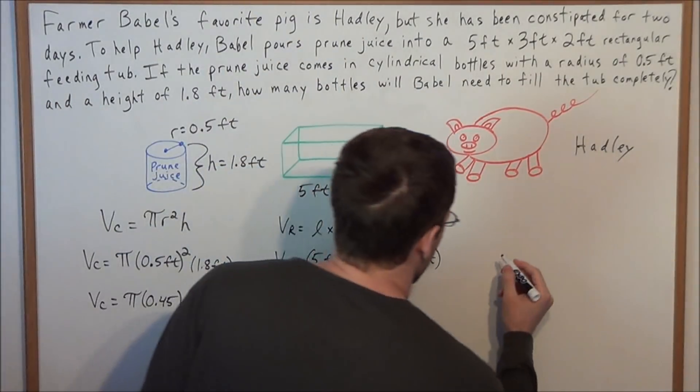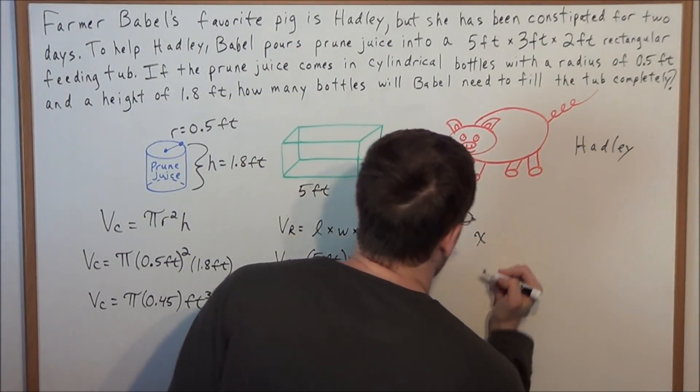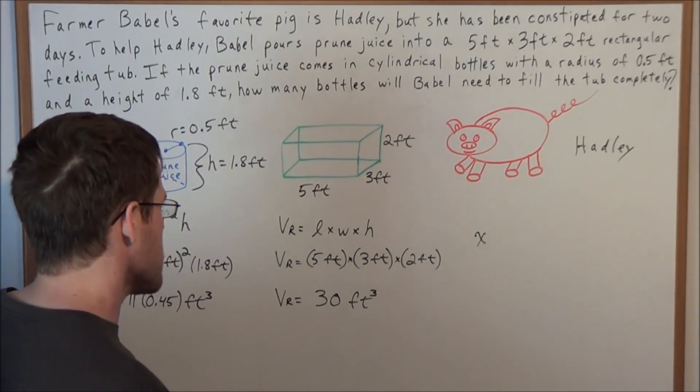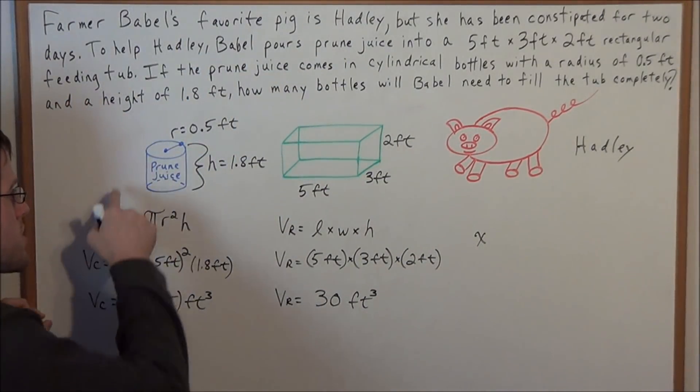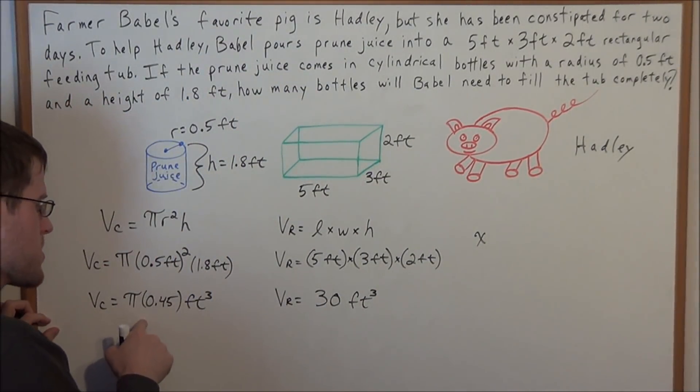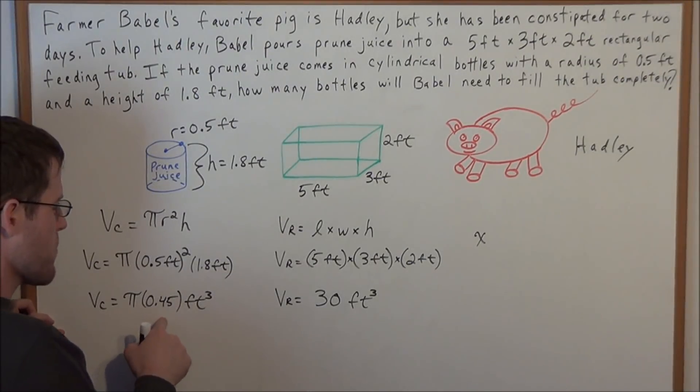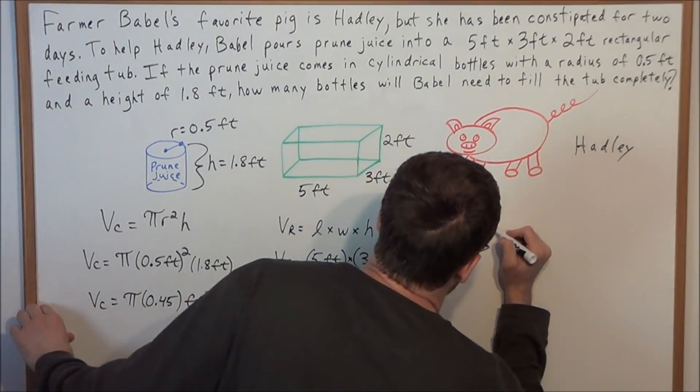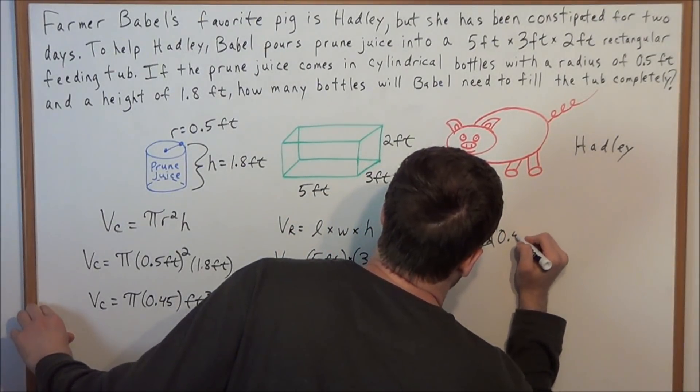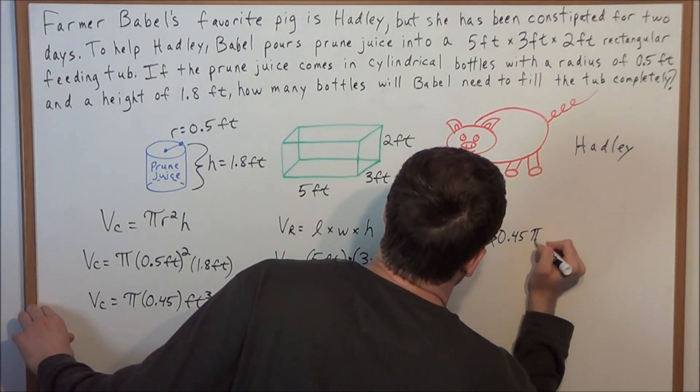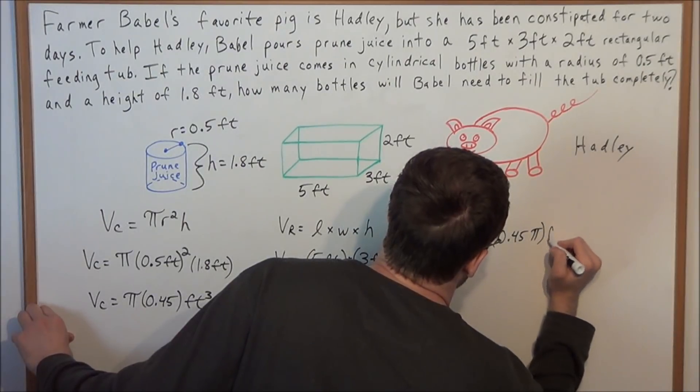Well, let's say that Babel is going to need x bottles to fill the tub completely. What is the volume of each of these bottles? We just found the volume of each of these bottles to be 0.45 times pi. The volume of each bottle is 0.45 times pi, and remember this is all cubic feet.